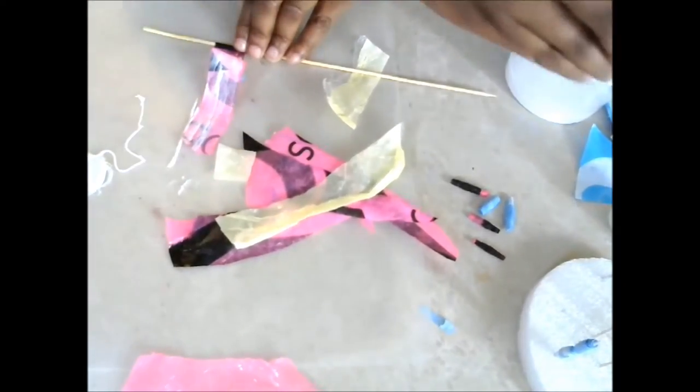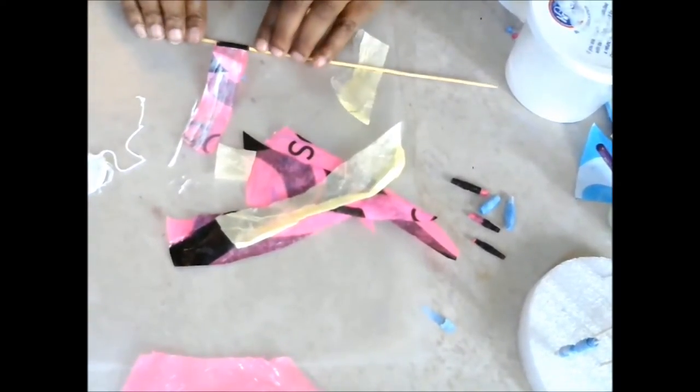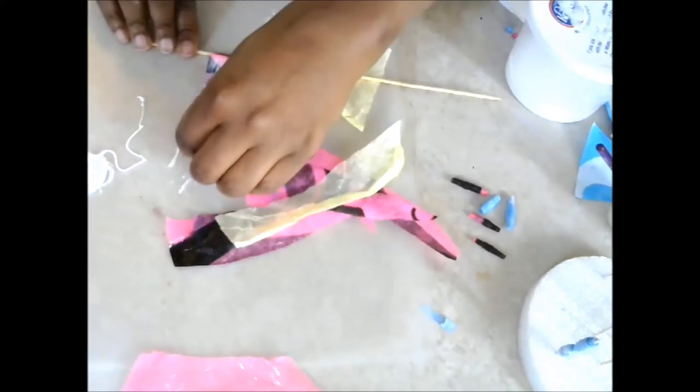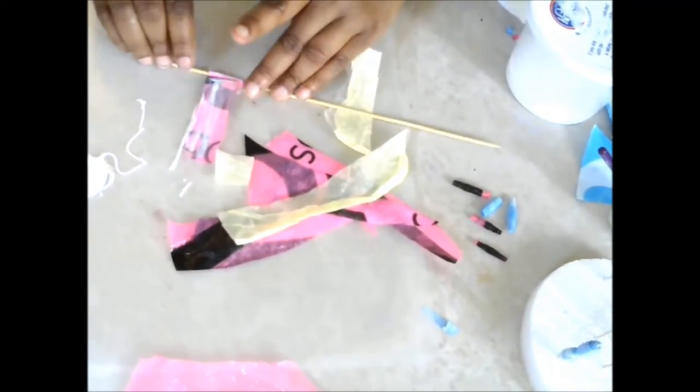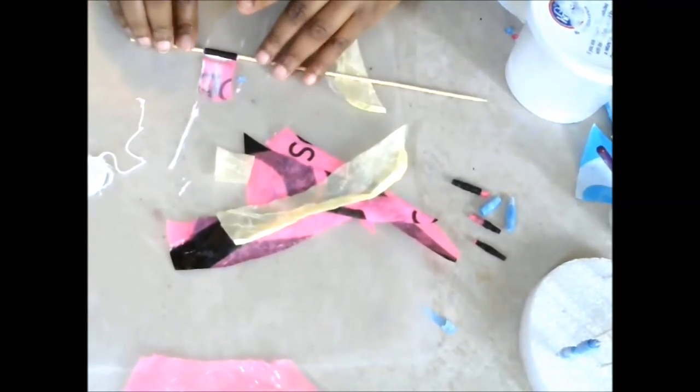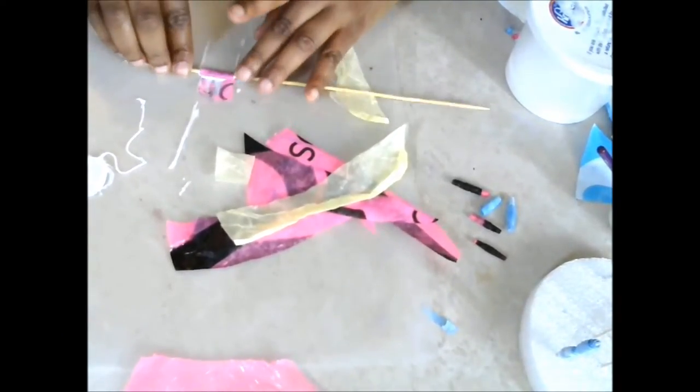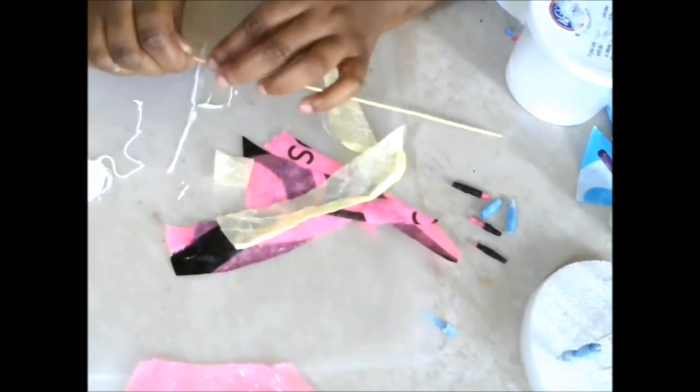Once you have it rolled so it's kind of situated, take your paint brush and roll it with some glue just like that. But make sure you roll it up a little bit before so it doesn't stick to your skewer - I've done that before, not so cute.